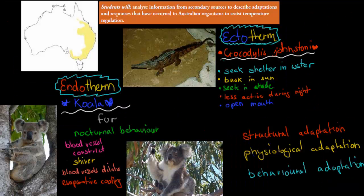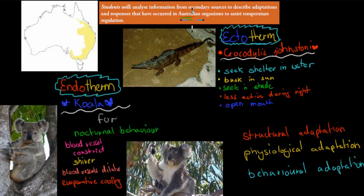Now going into the actual examples. We've got two examples: our endotherm and our ectotherm. We have to name Australian examples. I've got the koala for our endotherm, and Crocodylus johnstoni for our ectotherm — as you can probably tell, that's an Australian crocodile.